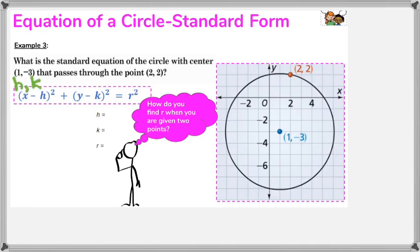First things first, we know the center is 1, negative 3. So, h is 1, and k is negative 3. We know that our point 2, 2 is an x, y coordinate. So, we can fill in the information right here. h is 1, k is negative 3, and we don't know the radius. That's the question mark right now.